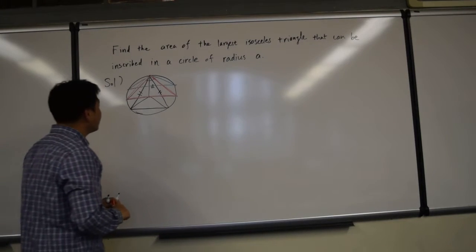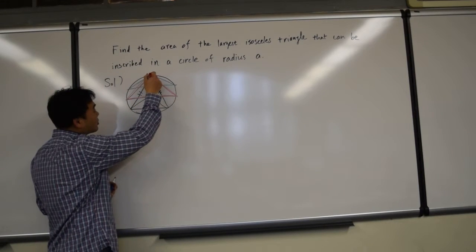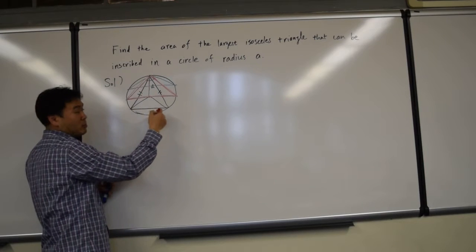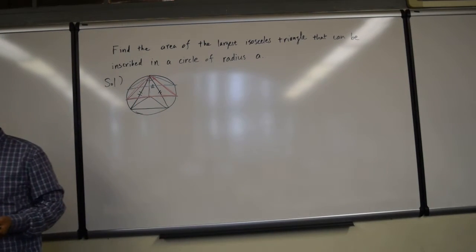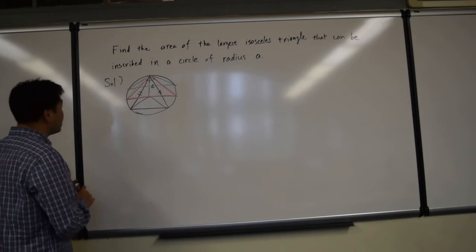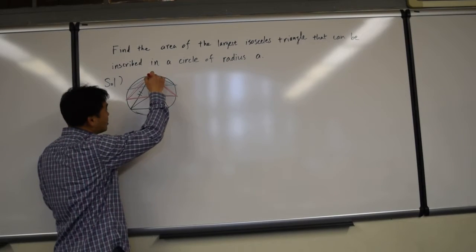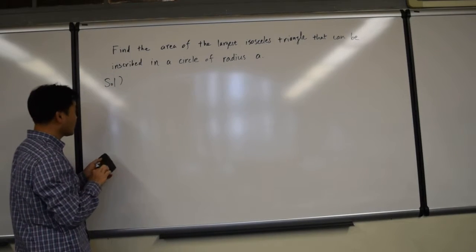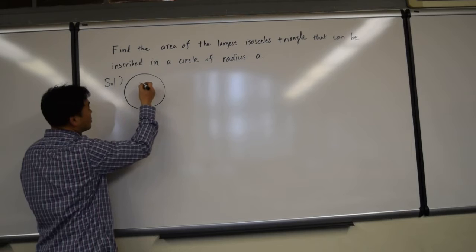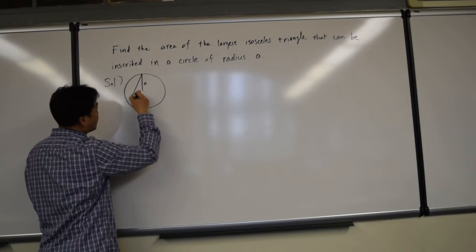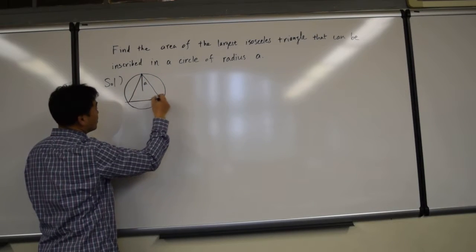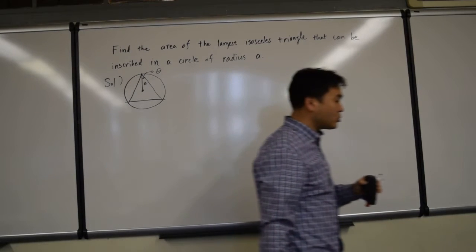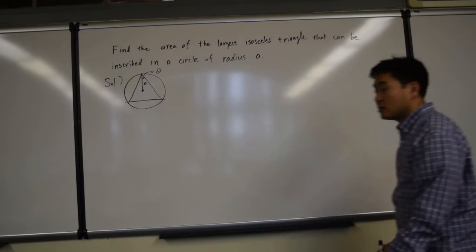90 degrees — that's from geometry. And then afterwards you can come downwards, and in the extreme case you'll have a triangle with a very small angle. So I think I can make the parameter to be this angle, which I'll call theta, and we'll try to come up with the area of the triangle using that theta.